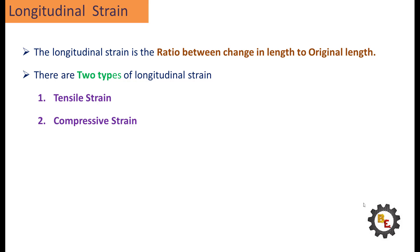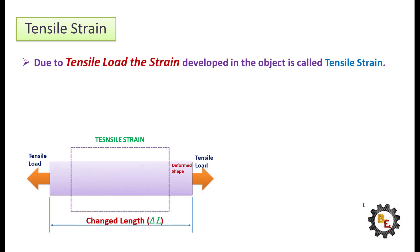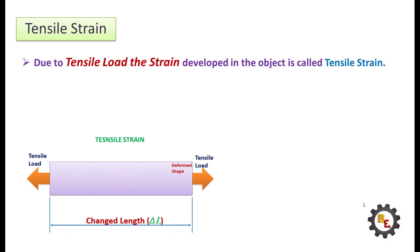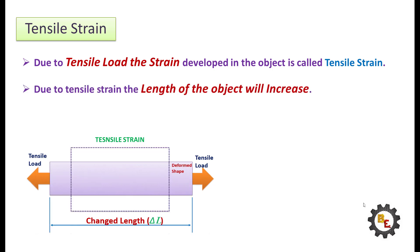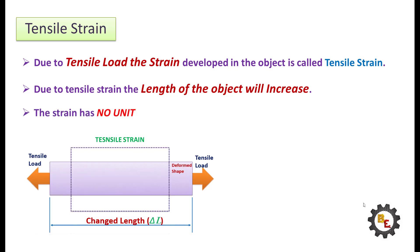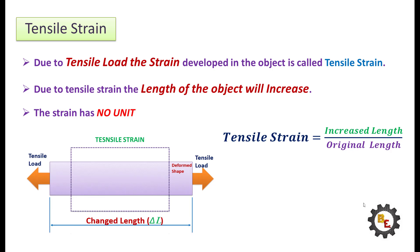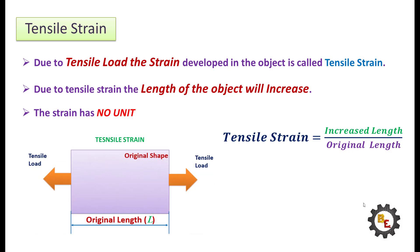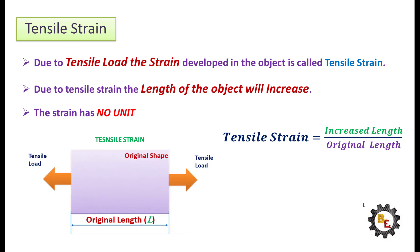Tensile strain: due to tensile load, the strain developed in the object is called tensile strain. Due to tensile strain, the length of the object will increase. The strain has no unit. Tensile strain is equal to the ratio between the increased length to original length.